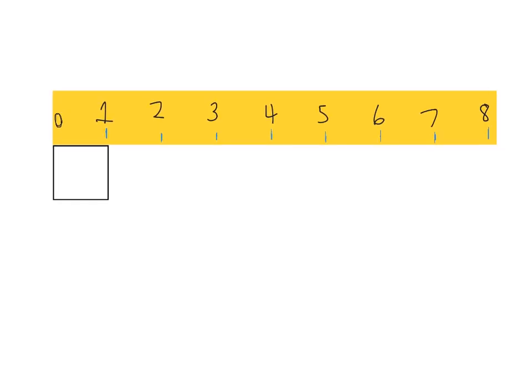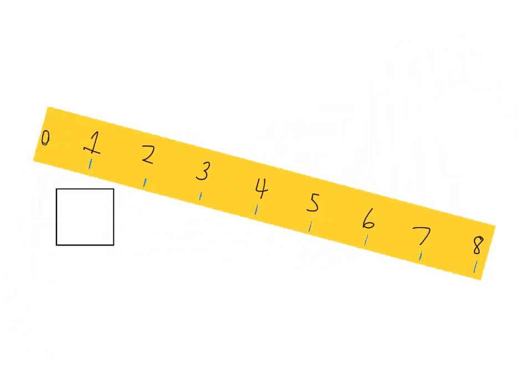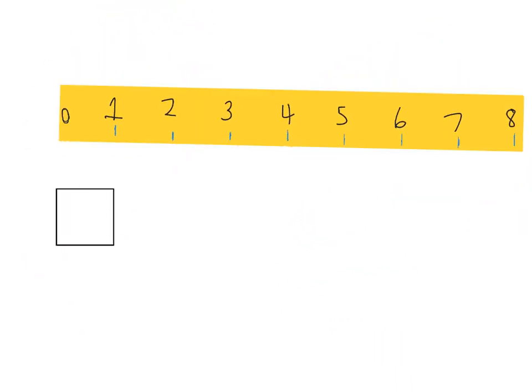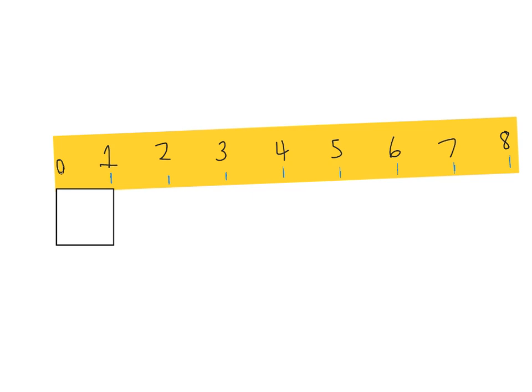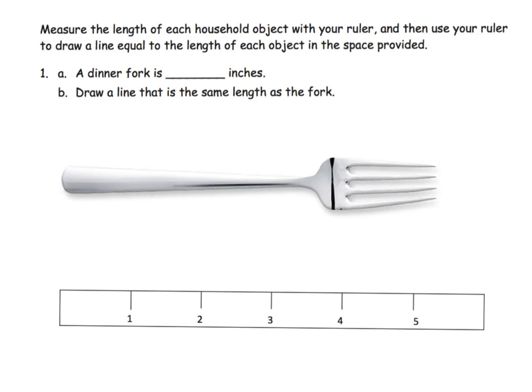So if we were to zoom out, we have now created a ruler and so now we have an official ruler that we can use to measure anything we want to measure. The directions say measure the length of each household object with your ruler and then use your ruler to draw a line equal to the length of each object in the space provided.